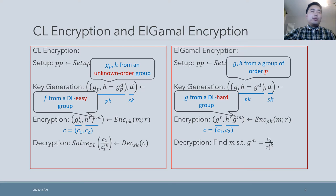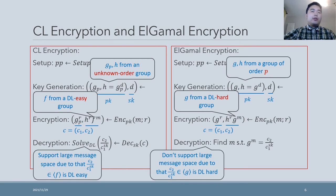As for decryption, as shown on the slides, both encryptions extract the message from the fraction C2 over C1 to the secret key power. However, in CL encryption this fraction comes from a DL-easy group, while in ElGamal encryption it comes from a DL-hard group. That is why CL encryption supports a large message space, while ElGamal encryption only supports a small one.